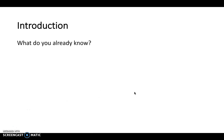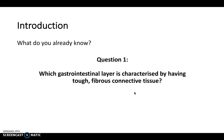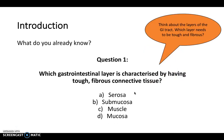Three simple questions to test what you already know about the GI system. I'd recommend pausing these videos to give yourself time to think. Question one: which GI layer is characterized by having a tough, fibrous connective tissue? Is it the serosa, the submucosa, the muscle, or the mucosa? Try to think about the generalized layers of the GI tract and which layer needs to be tough and fibrous.